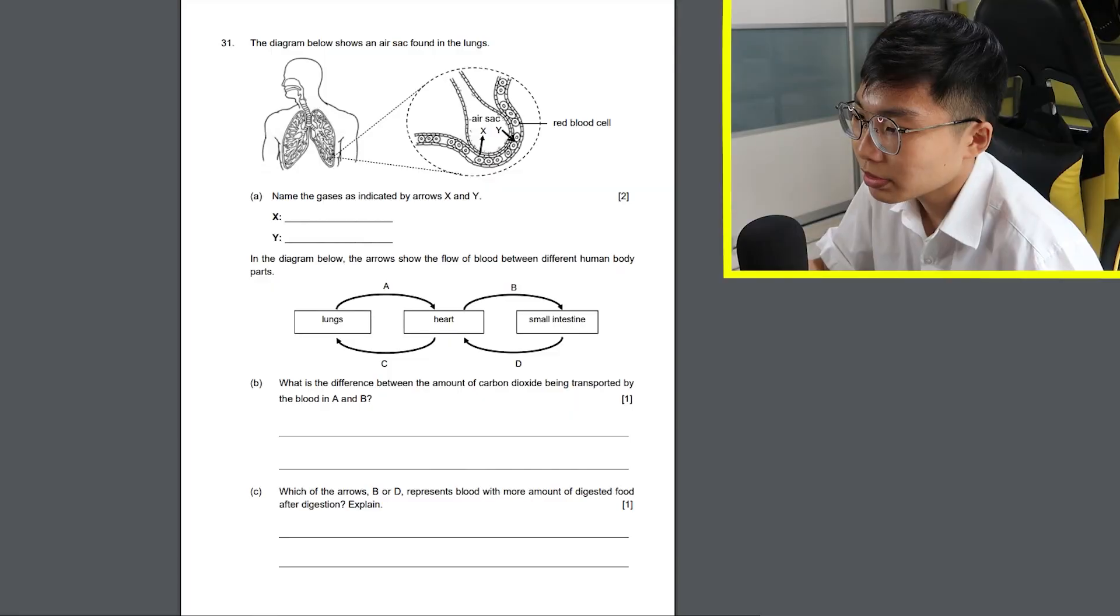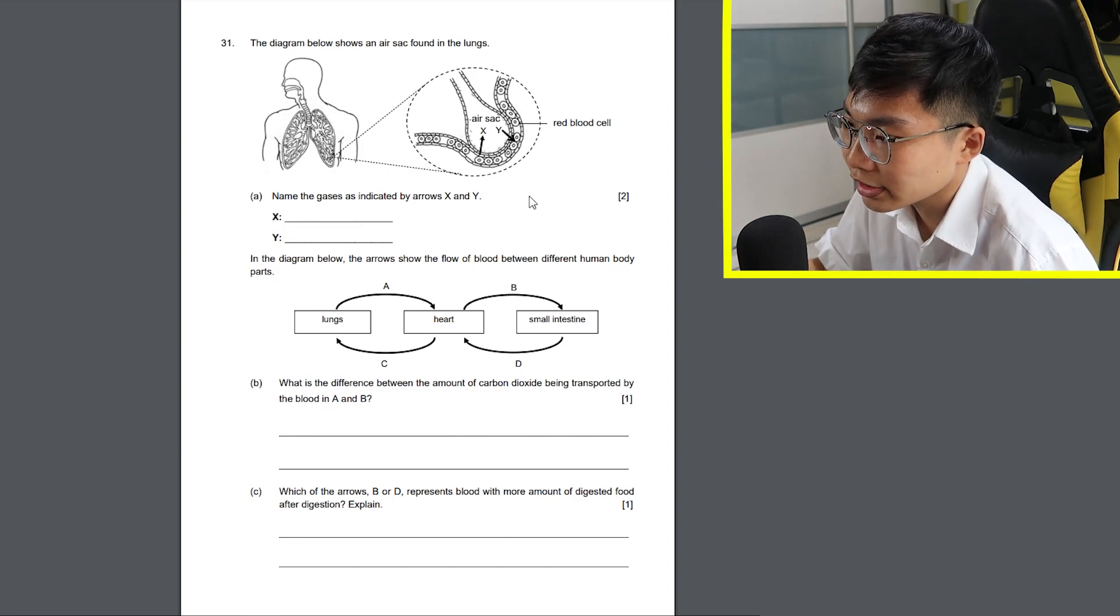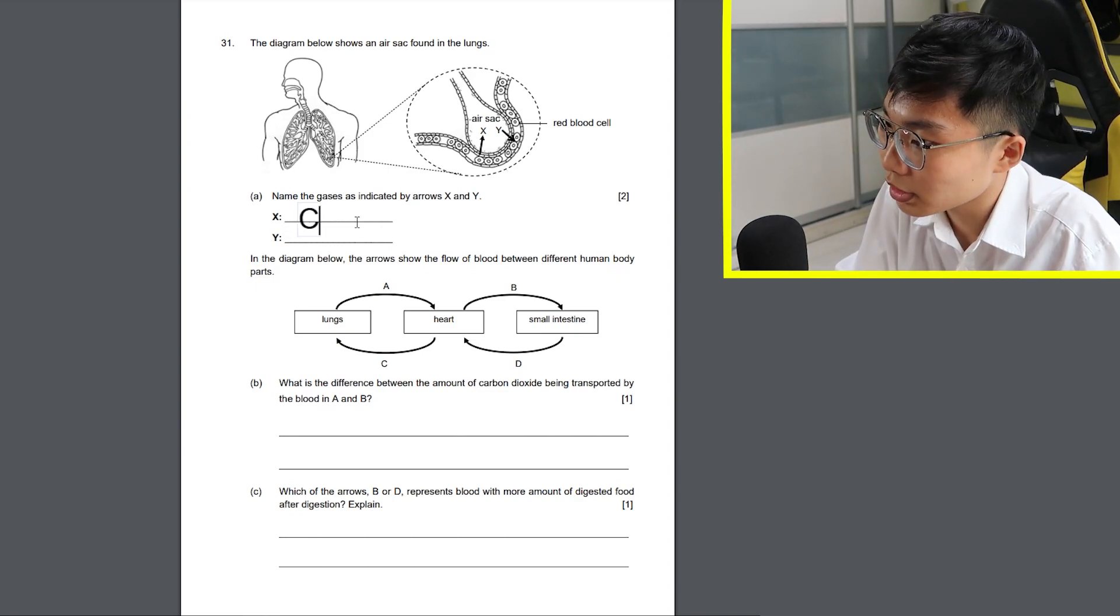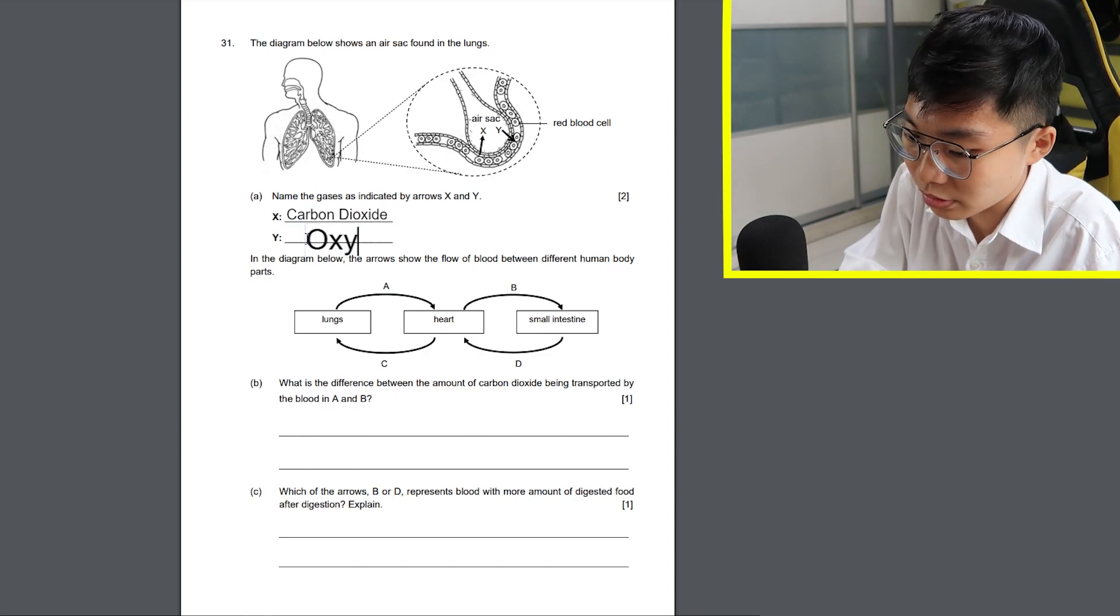Alright, question 31. Name the gases as indicated by arrows X and Y. X will be carbon dioxide. Then Y will be oxygen. Woo! Free 2 marks there.